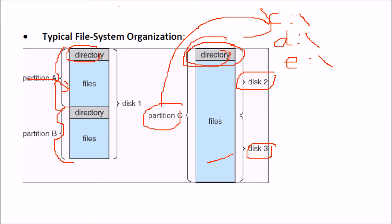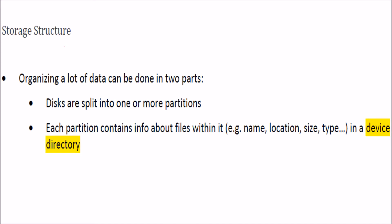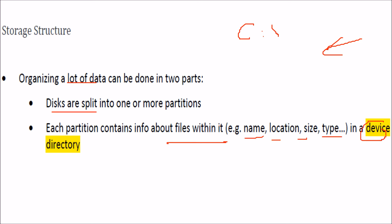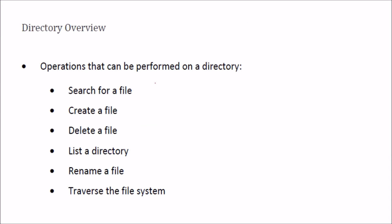In one disk you can have a directory, and inside it you have files. You can make a partition and then another partition with another directory. When we talk about storage structure, you want some organization of data. First, disks are split into one or more partitions — like C:\ and D:\ — and whenever you plug in a pen drive, you might see another partition appear.